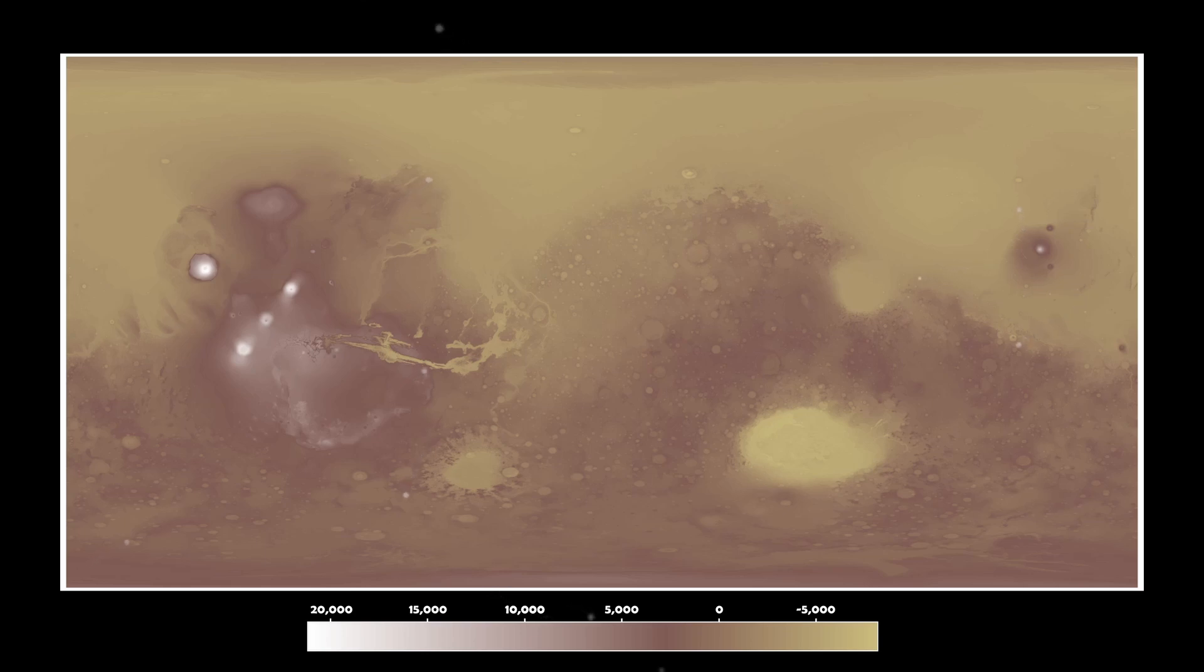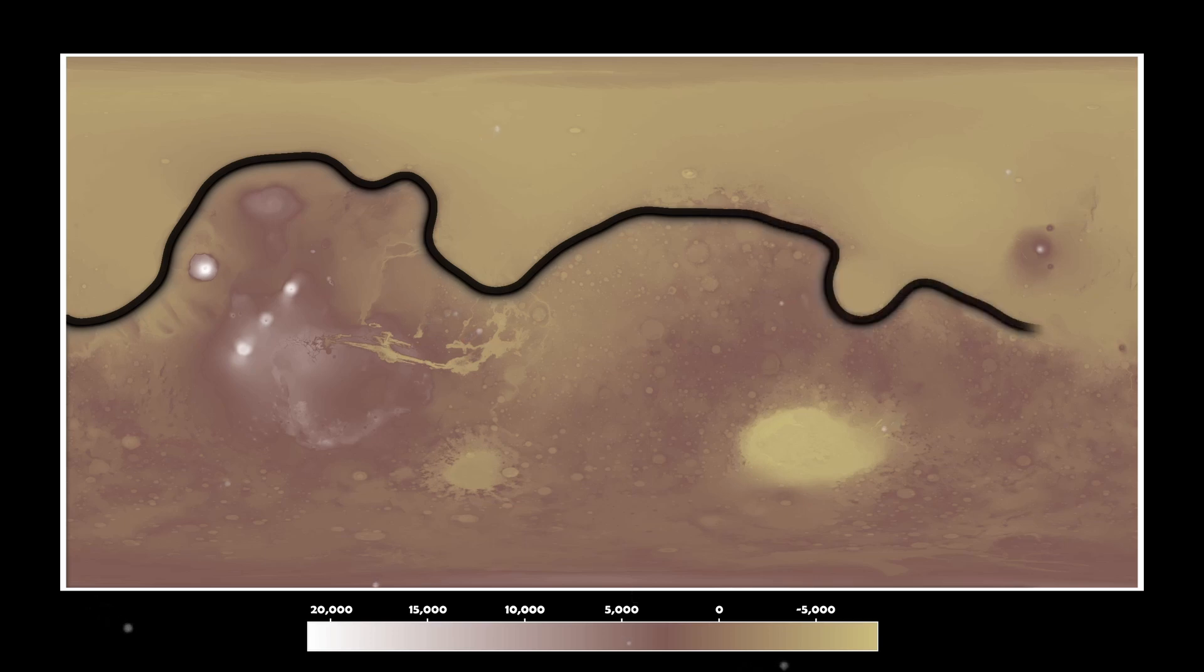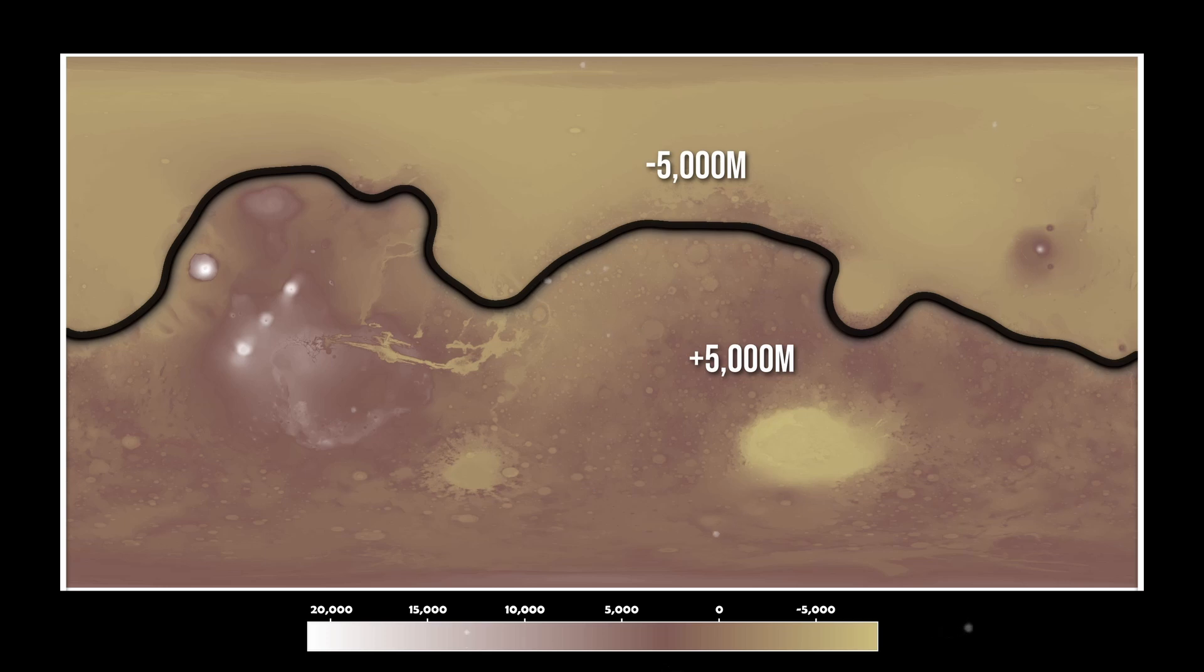But back to Mars, what really stands out is that the northern hemisphere is way lower than the southern hemisphere. There is a huge drop, several kilometers actually. And the northern hemisphere isn't just lower, it's also way flatter, way smoother.